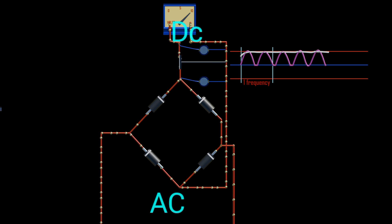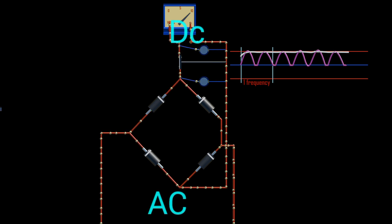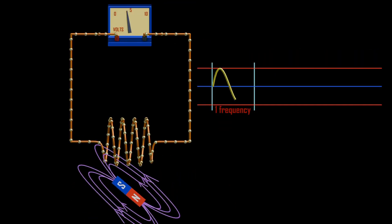Rectification is the conversion of an alternating current into a direct current. This involves a device that only allows one-way flow of electric charge.